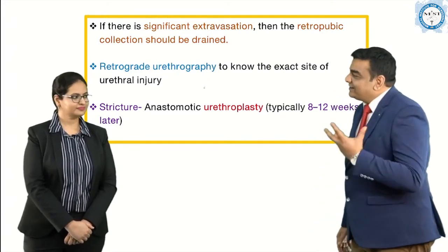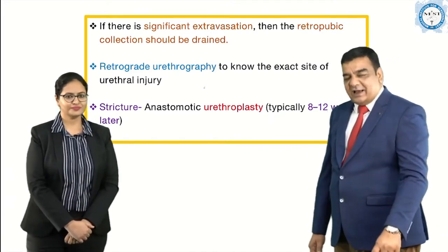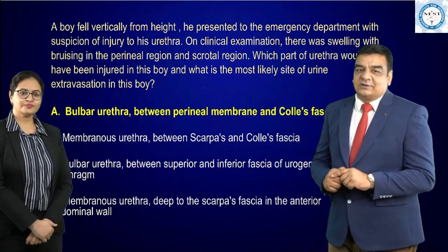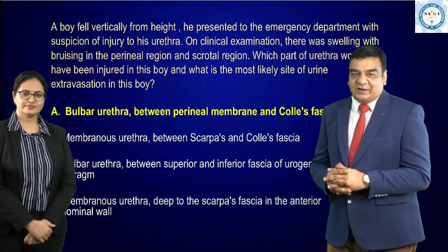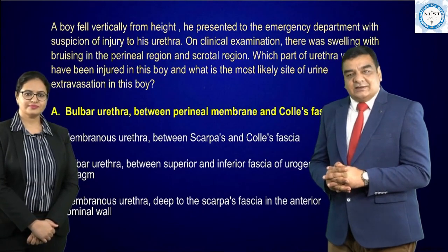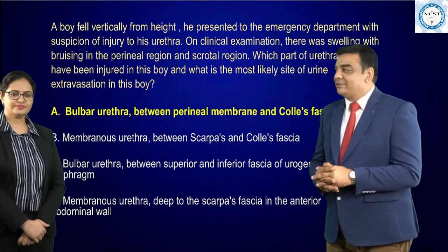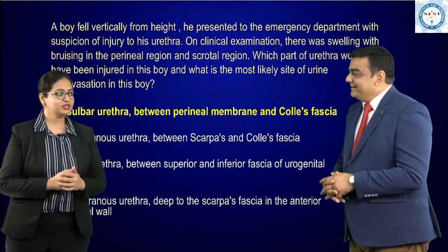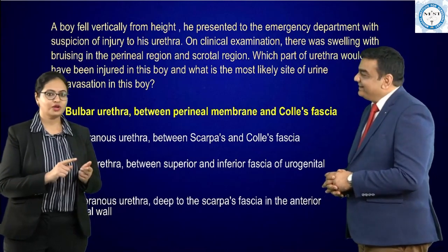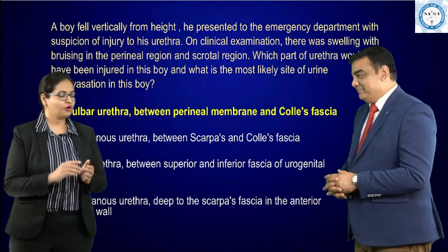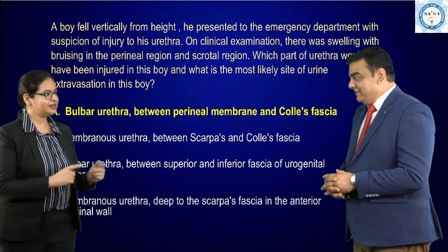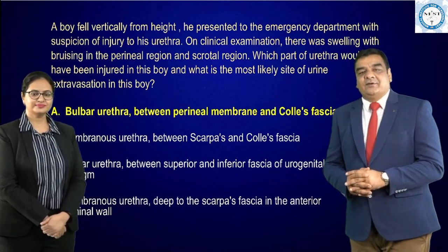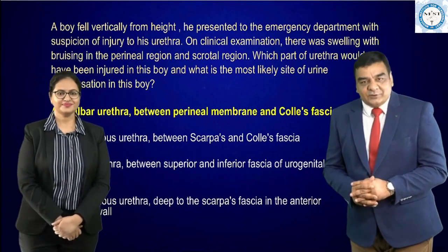Returning to the original clinical scenario: the boy fell from height with injury to the perineal and scrotal regions and bruising in that area. The answer is the bulbar urethra. For urine collection, look for an option indicating the superficial perineal pouch, scrotum, penile region, or anterior abdominal wall — or correlate with the fascias as given in the question options. We hope you understood this topic and thank you for your patient listening. We wish you all the very best.